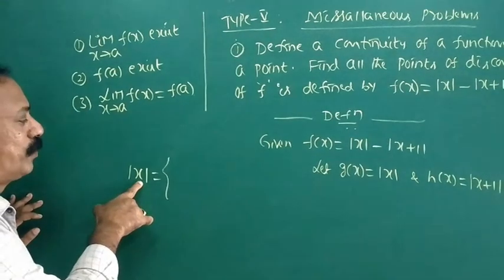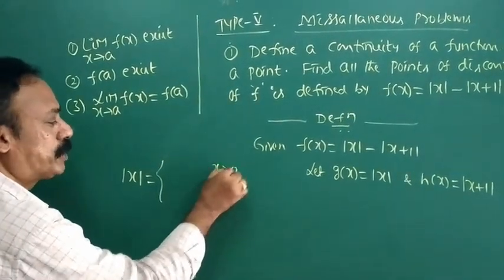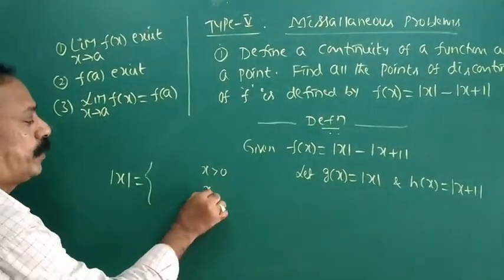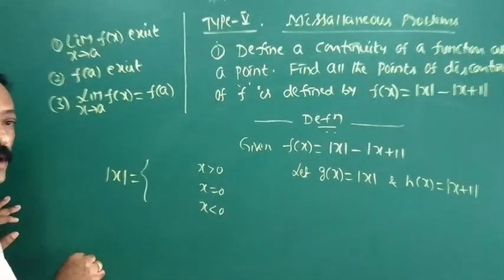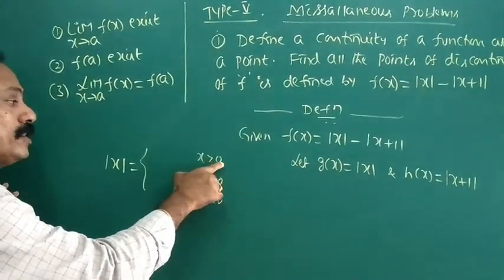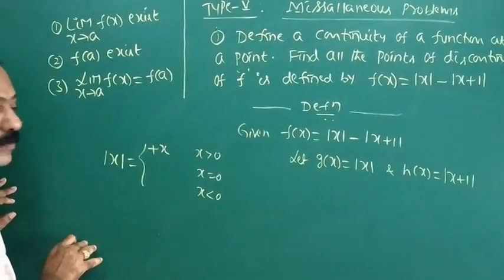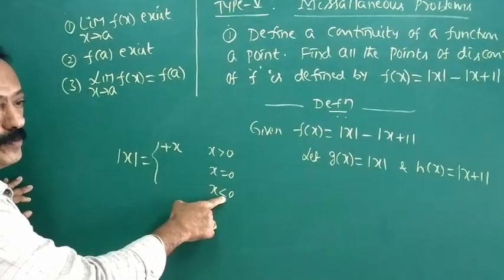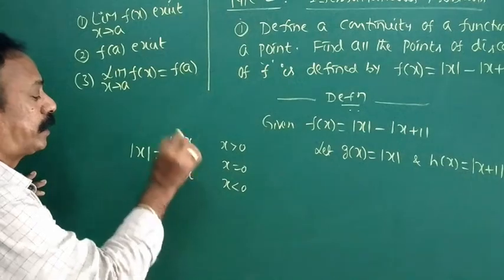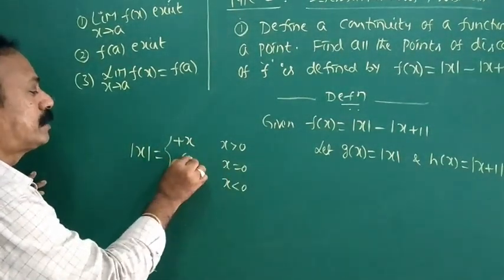Mod x can be expressed in three ways: what happens when x is greater than 0 — it is always positive, so we write plus x; when x is less than 0 — it is always negative, so we write minus x; and when x is equal to 0, we simply write 0.